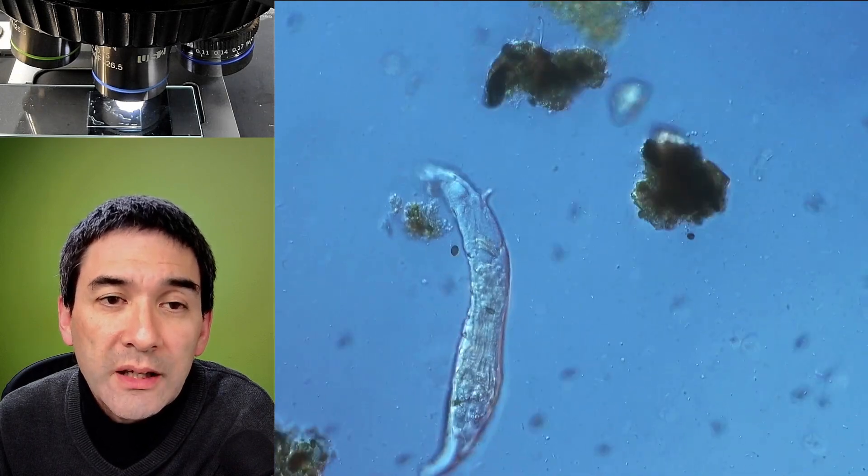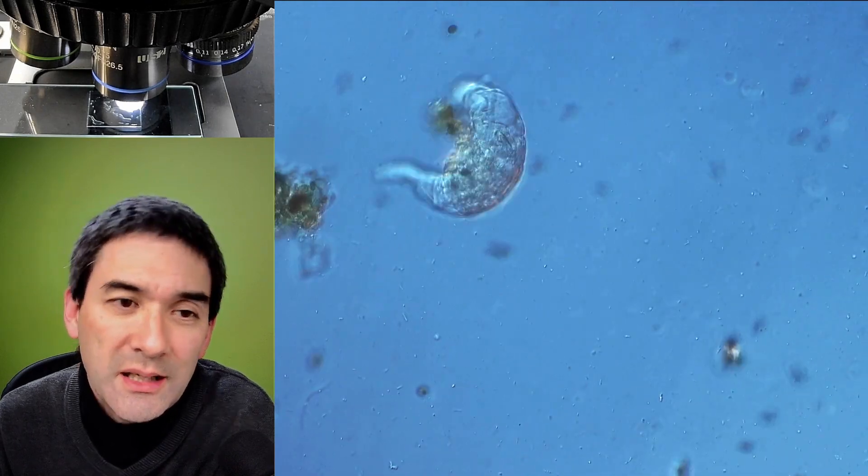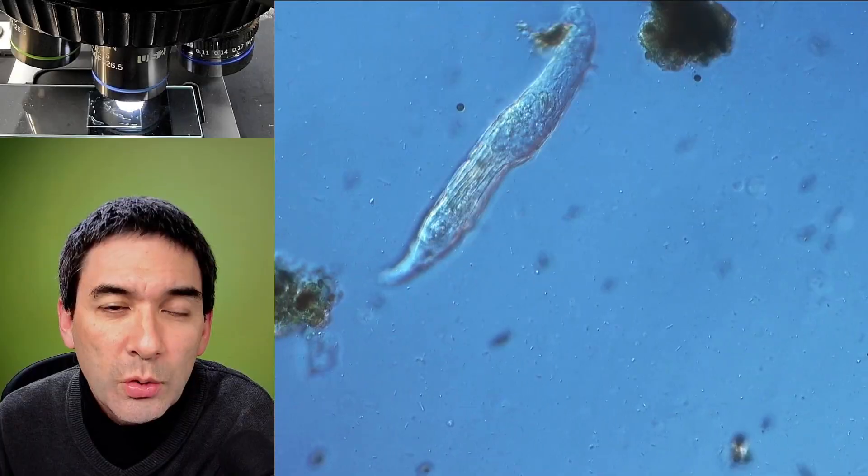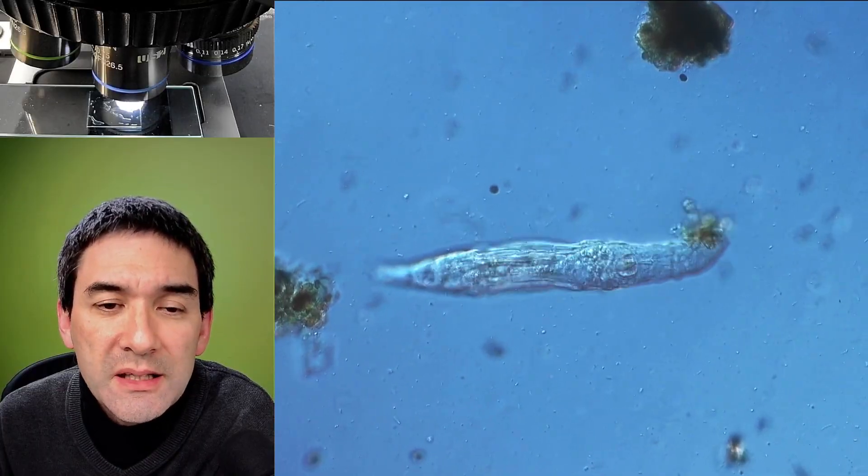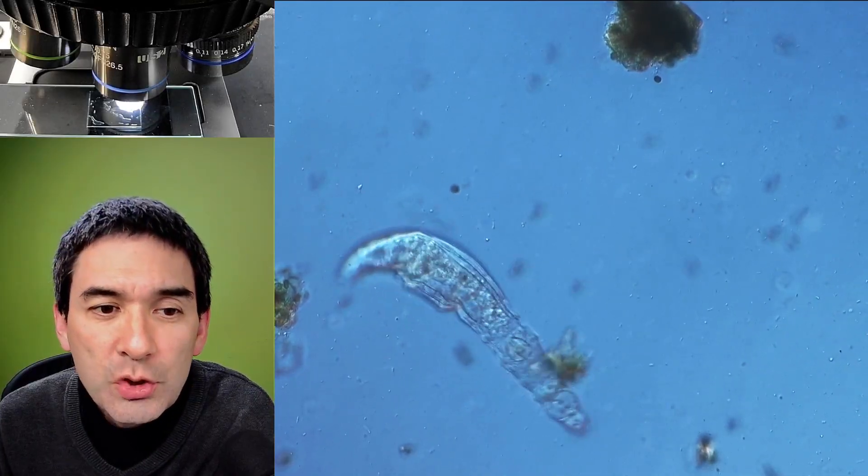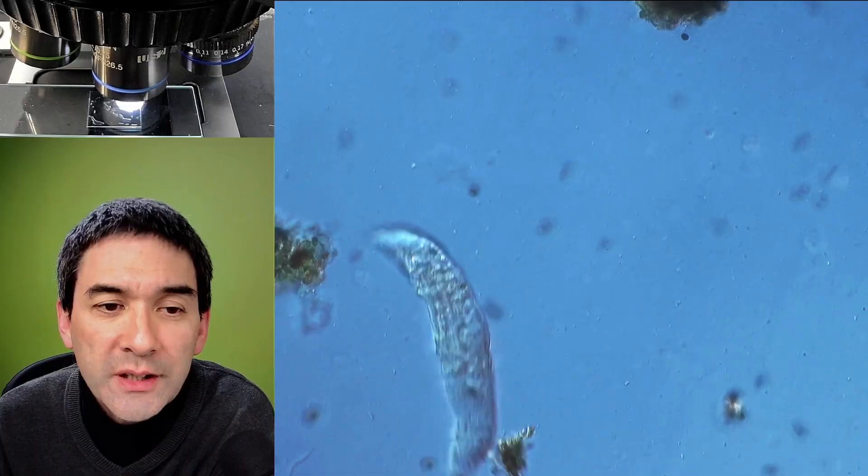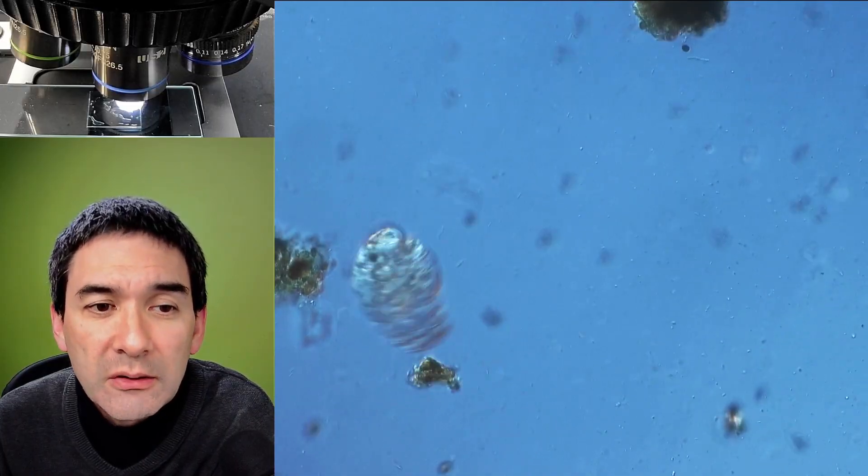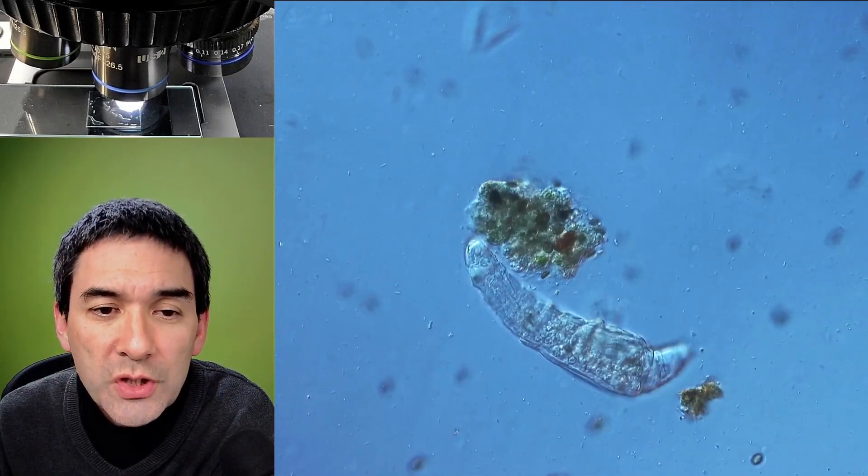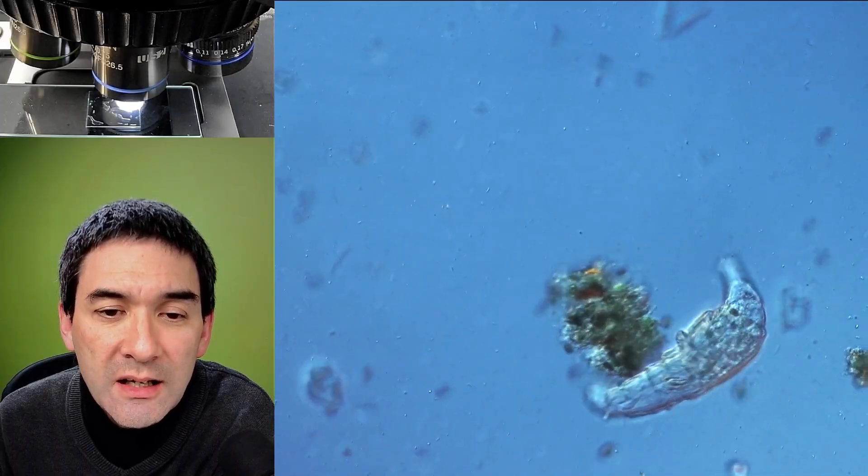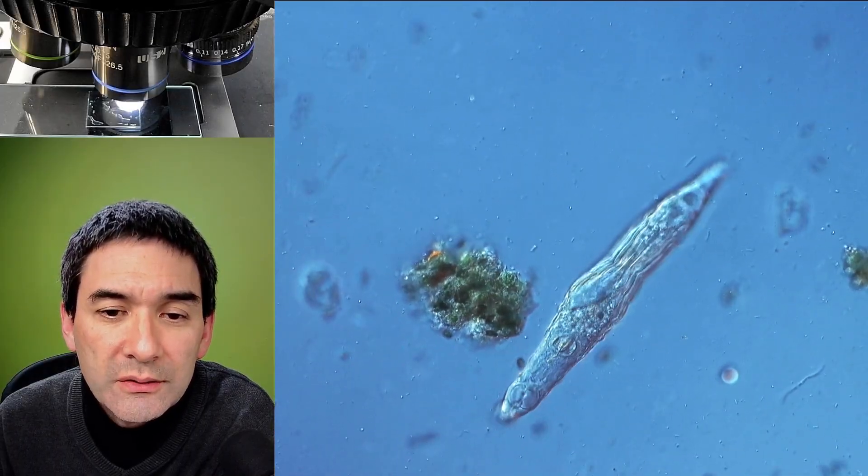This means not only that they are made of many cells, as the name already implies, but the cells are so-called differentiated. This means that there are different cell types, each one with a different function. And this characterizes a multicellular animal. It's not just a whole bunch of cells together, but the cells are actually specialized and they work together.